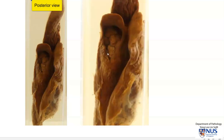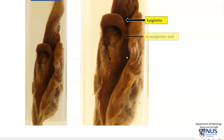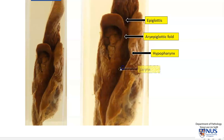So let's have a closer look at the posterior view. We can see the epiglottis here. This is the aryepiglottic fold. This is the region of the hypopharynx and the piriform sinus would be in this area. The larynx has not been cut open, so we are not able to actually see the vocal cords here. And then more inferiorly we can see the proximal part of the esophagus.